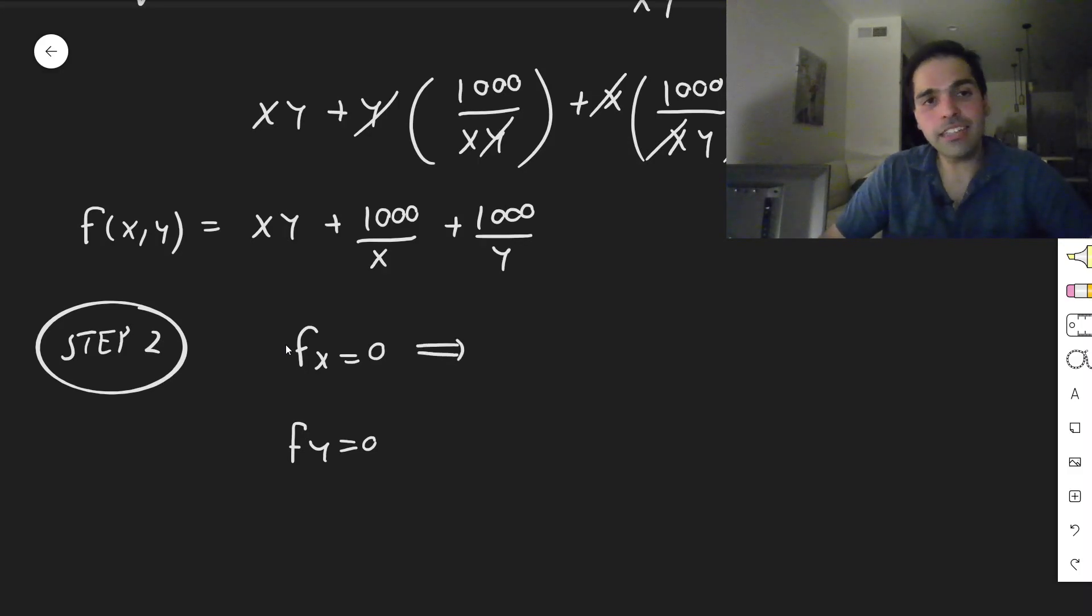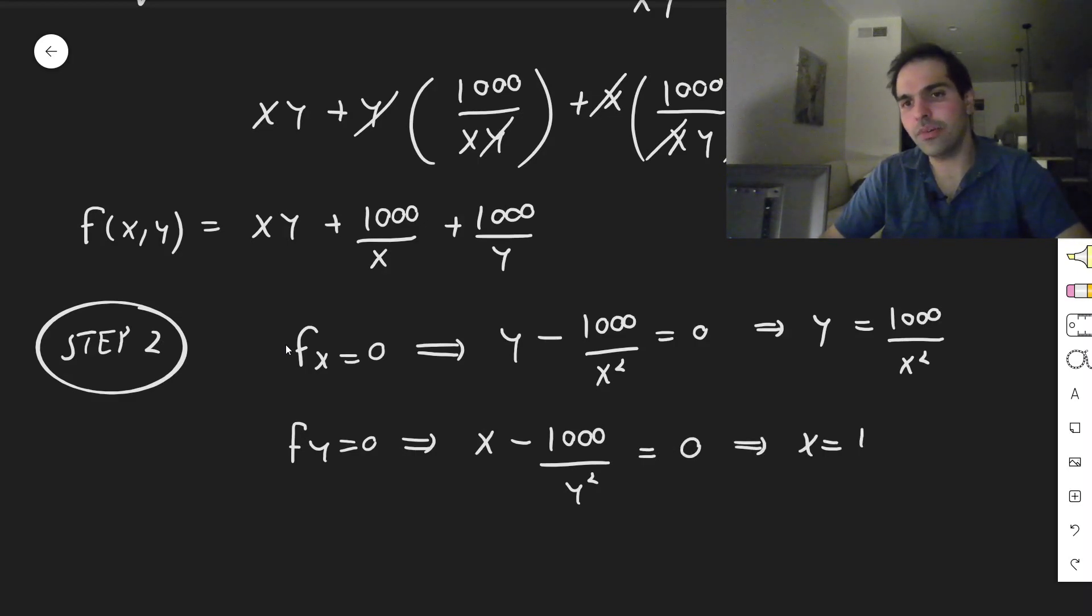Now, the x derivative of this is just y minus a thousand over x squared, which you set equals zero, and you get y equals a thousand over x squared. On the other hand, fy becomes x minus a thousand over y squared, simply by using partial derivatives. And you set that equals zero, and then you get x equals a thousand over y squared.